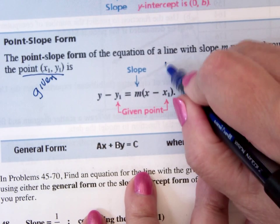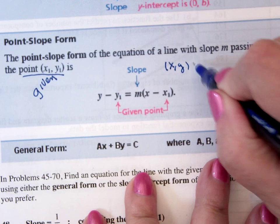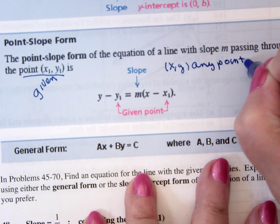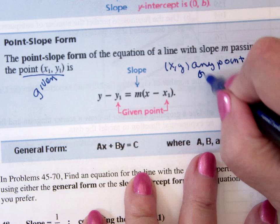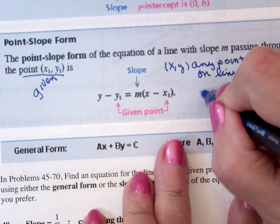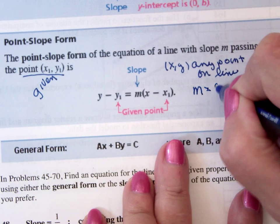And x, y is any point on the line. And m, of course, is the slope.